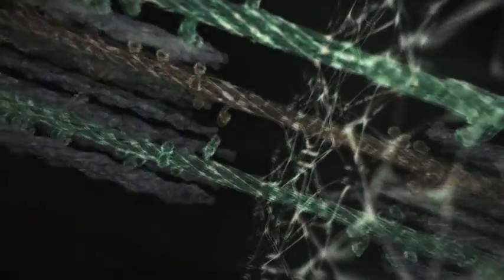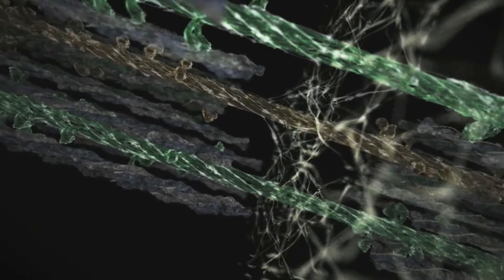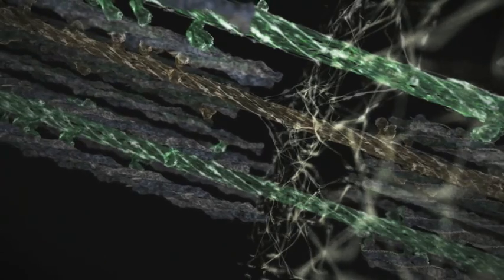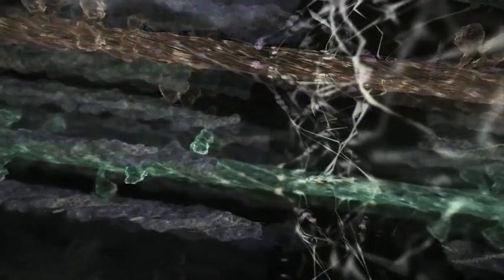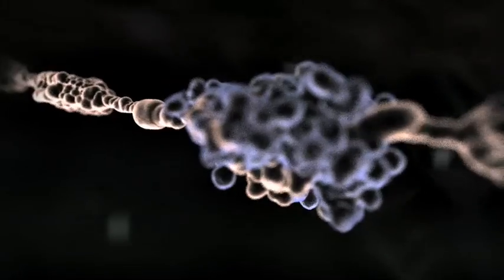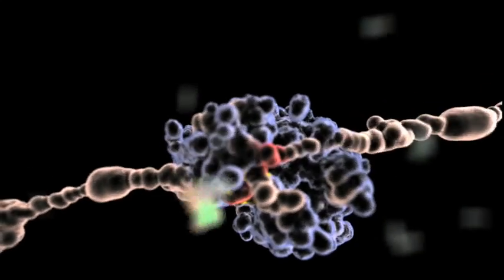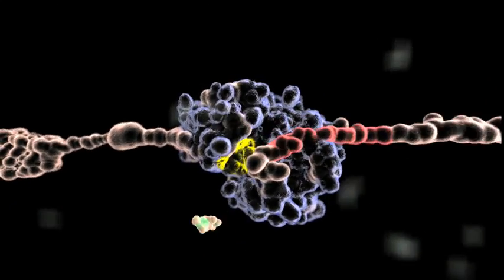How does titin kinase get activated by force? In combination with molecular dynamic simulations and single molecule force spectroscopy experiments, we could show that its ball of wool-like unwinding results in the opening of a binding pocket primed for docking of the small molecule ATP.